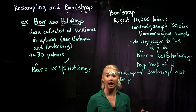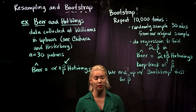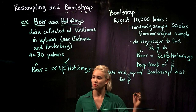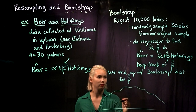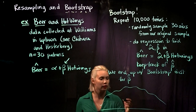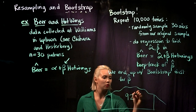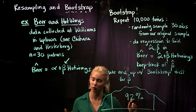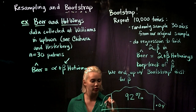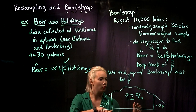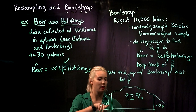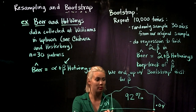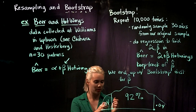We end up with a bootstrap distribution for beta hat, and remember that simulates or approximates the sampling distribution for beta hat. We can then plot it out and say that we want a 92% level of confidence. That means we'll have 8% left over to be split between the two tails — 0.04 in each tail. We look for the two quantiles with 0.04 in each tail, and these two points comprise our 92% confidence interval for the slope beta hat.